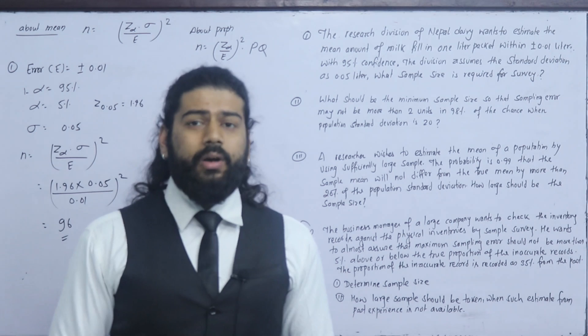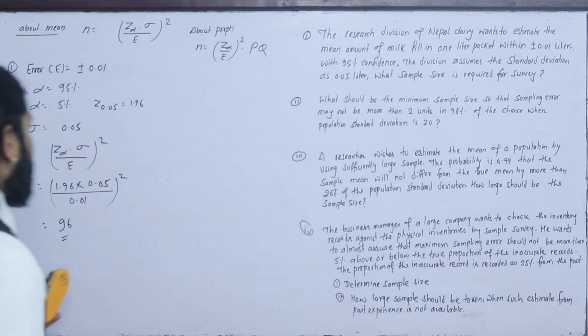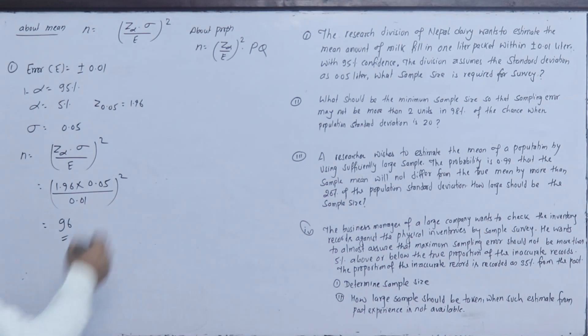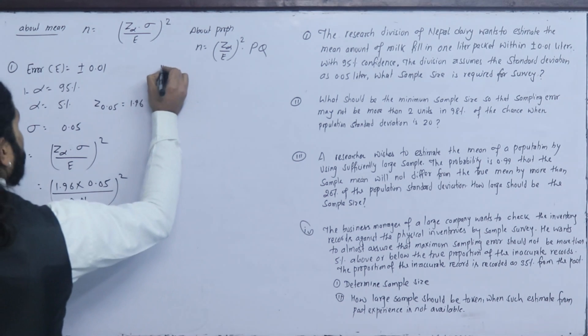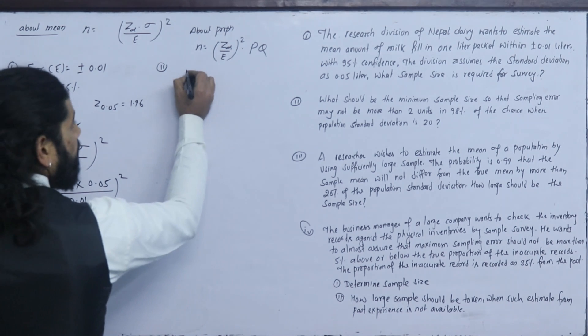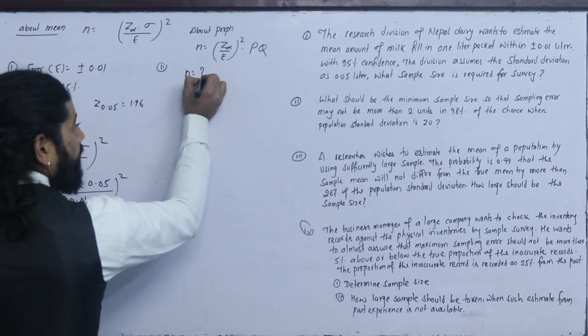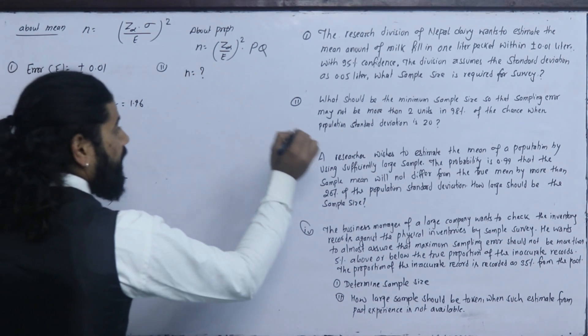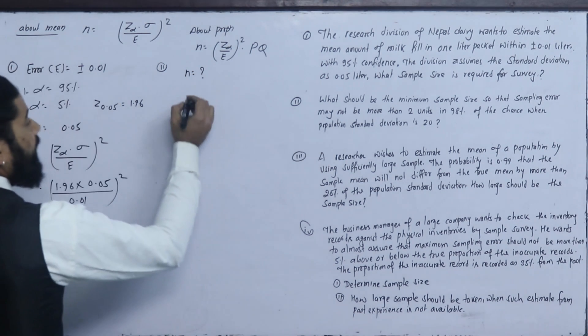Now let's look at question 2. What should be the minimum sample size such that the sampling error may not be more than 2?